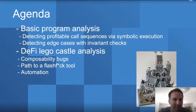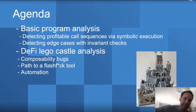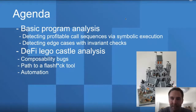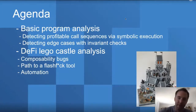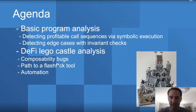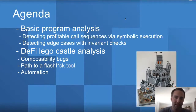This talk is structured to go from easy to complicated. We'll start by explaining how symbolic execution works in principle and how it's applied in bug detection in simple scenarios — a single smart contract with some kind of Ether extraction. Then we'll move on to DeFi lego castles consisting of different smart contracts that interact with each other, and look at tools that deal with this setup and the challenges in developing them.